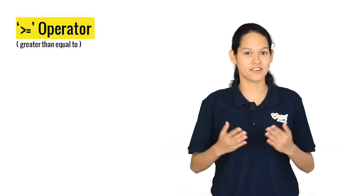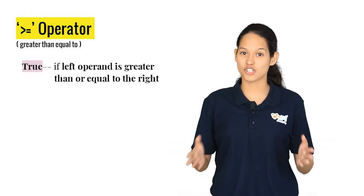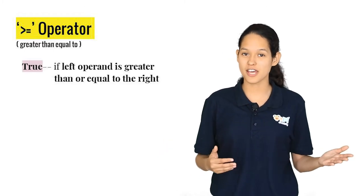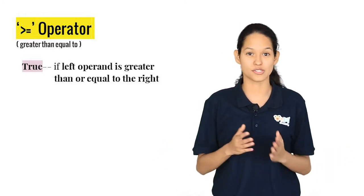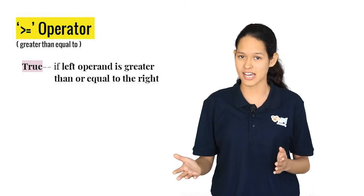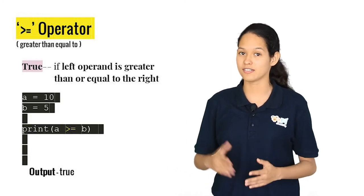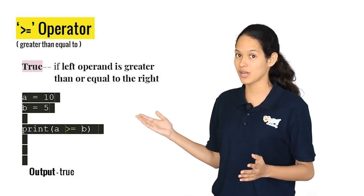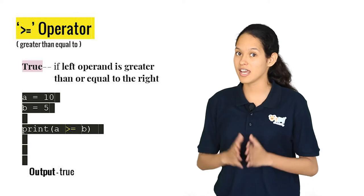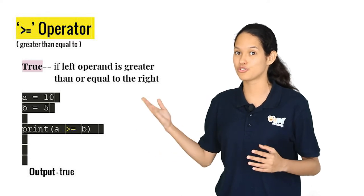Similarly we have the greater than equal to operator. It checks if the left hand side operand is greater than or equal to the right hand side operand. You can notice the difference on the screen and try it out and see if you are getting the output true.